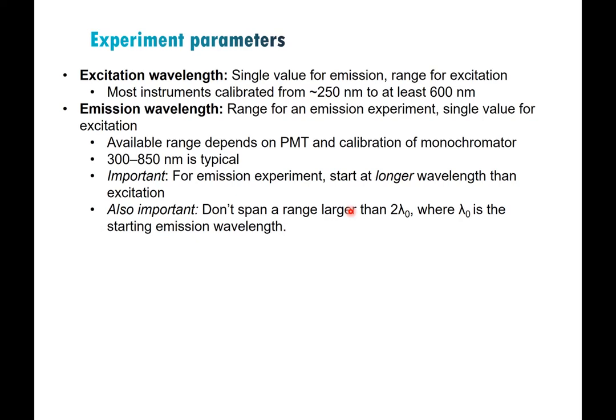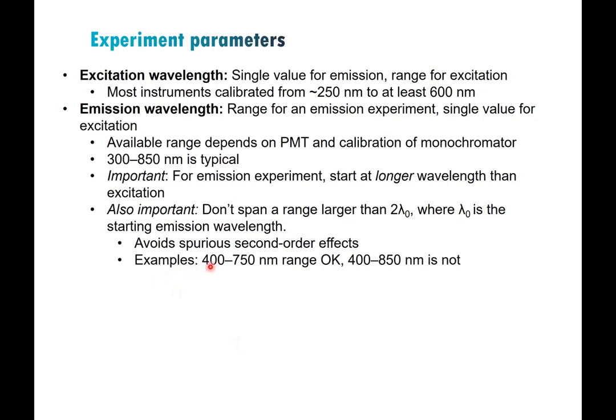Because of second-order effects, in addition to detecting λ you'll also detect 2λ. So if you have emission at some wavelength and you detect out to two times that wavelength, you'll see signal there that is not real. If you have a sample that spans a wider range, your only choice is to do it in two pieces and use filters to block the higher-energy light when collecting the lower-energy portion. For example, we often start at 400 nanometers and can go out to 750 or 800, but not beyond that without risking second-order artifacts.